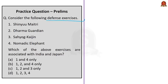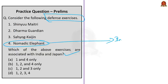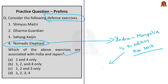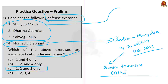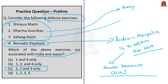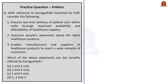The fourth question is about defense exercises — Shinyuu Maitri, Dharma Guardian, Sahayog Kaijin, and Nomadic Elephant. Note that Nomadic Elephant is an exercise between India and Mongolia, not India and Japan. The 14th edition of Nomadic Elephant was conducted last year in October at the Bakloh cantonment in Himachal Pradesh. Its objective is to train army troops in counter-terrorism and counter-insurgency operations under the UN mandate. The remaining three — Dharma Guardian (armies), Shinyuu Maitri (air forces), and Sahayog Kaijin (coast guards) — are all India-Japan exercises. The correct answer is option C (1, 2, and 3 only).